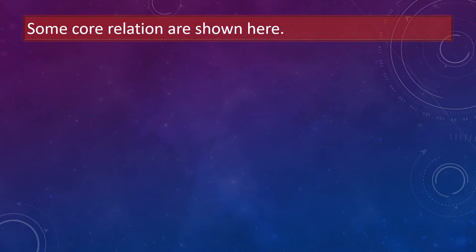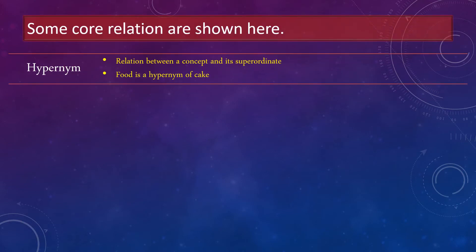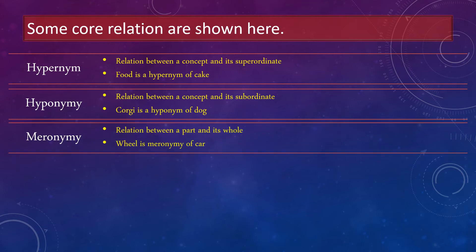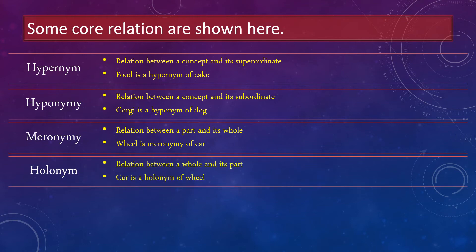Some correlations are shown here. Hypernym: relation between a concept and its superordinate — for example, food is a hypernym of cake. Hyponymy: relation between a concept and its subordinate — for example, corgi is a hyponym of dog. Meronymy: relation between a part and its whole — for example, wheel is a meronym of car. Holonym: relation between a whole and its part — for example, car is a holonym of wheel.